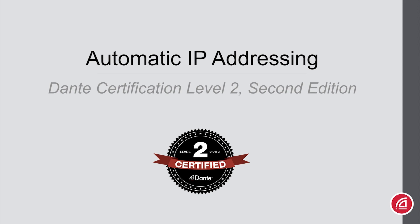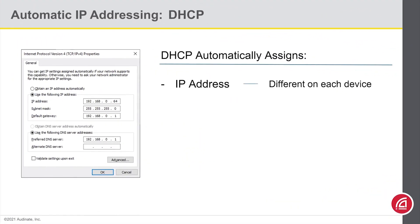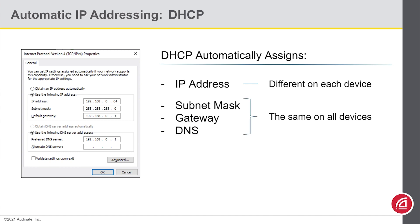Dante Certification Level 2, 2nd Edition — Automatic IP Addressing. When our devices join a network, they need to get an IP configuration, including the IP address, subnet mask, gateway, and a list of DNS servers. The IP address needs to be different on each device, but the other settings will likely be the same on all devices.